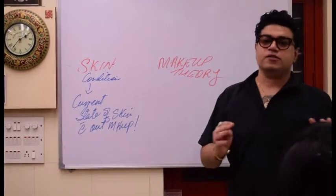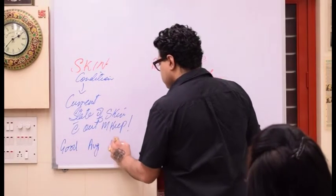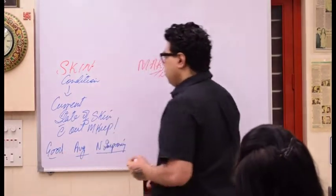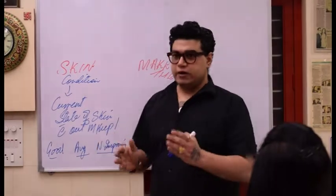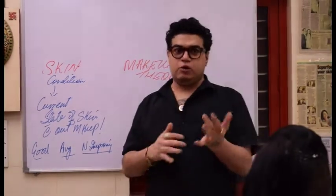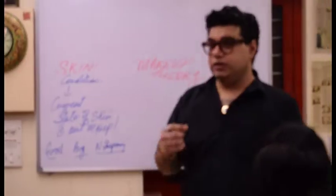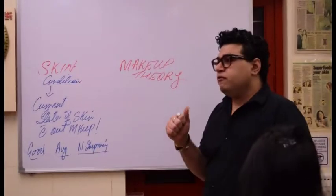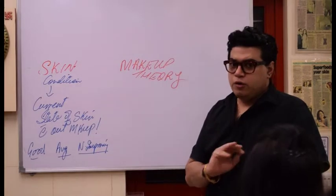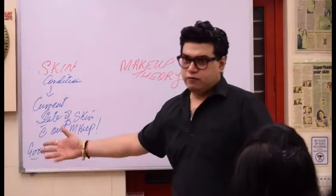We have three categories that we generalize people into for skin condition: Good, Average, and Needs Improving. These categories help you segregate people so you know what kind of makeup to use. If somebody has good skin condition, that means very little pigmentation, no holes, no marks, no scars, no acne, no deep lines, very few fine lines. That is very rare — very few people have it.